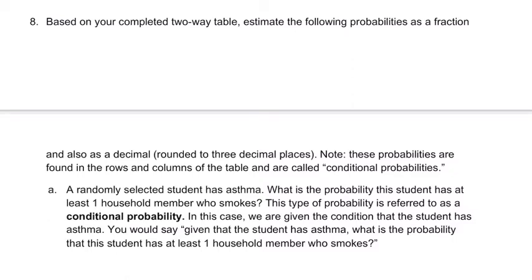Question eight. It's on these two pages here. It says, based on your completed two-way table, estimate the following probabilities as a fraction and also as a decimal rounded to three decimal places. Note, these probabilities are found in the rows and columns of the table. They're called conditional probabilities, and I'll explain that.